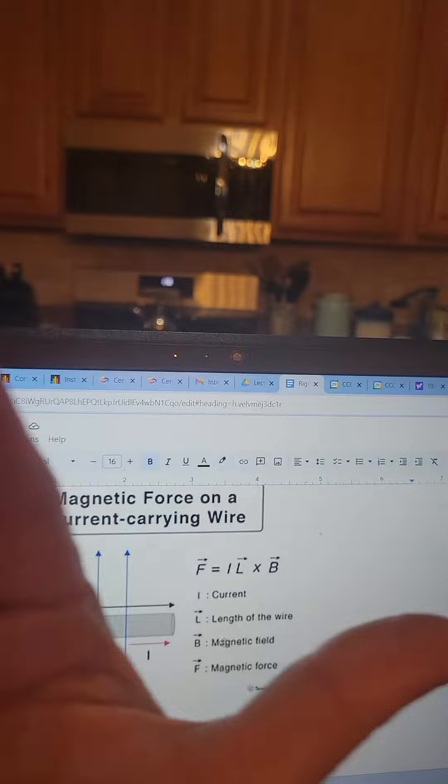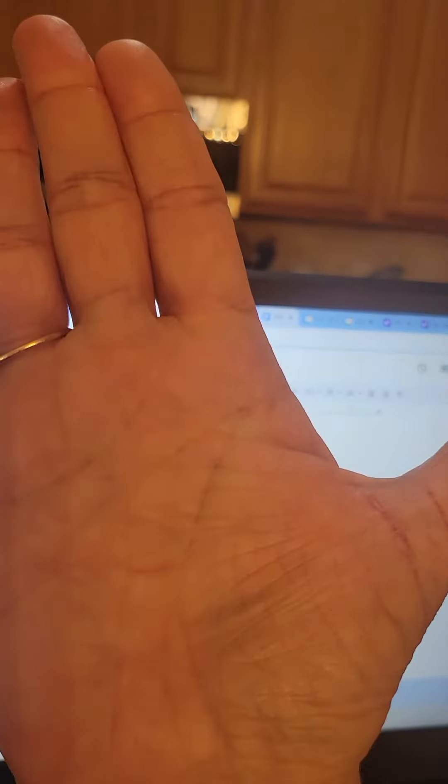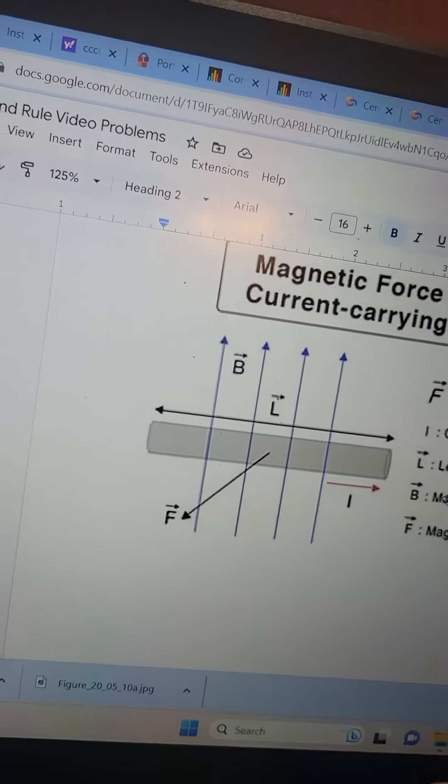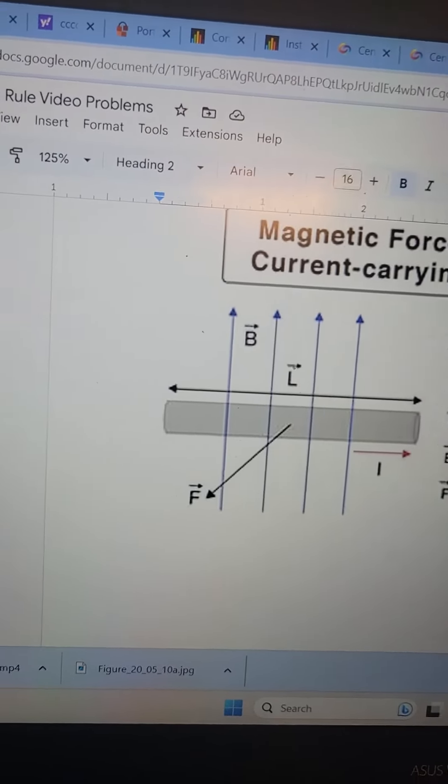So the current is to the right, the field is straight up, and the palm is coming out at you. So this force is coming out at you. It will be represented by a circle with a dot in it.